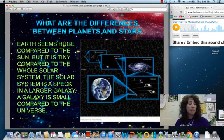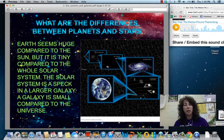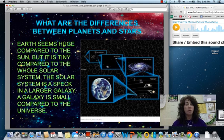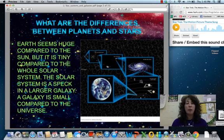The difference between planets and stars. This is important. Of course, Earth is a planet, and it seems huge compared to the sun, but that's only because we're on Earth and the sun is so far away. Compared to the whole solar system, it is all small. And then compared to our galaxy, the Milky Way, it is even smaller. So we have to think about all of these things in comparison to each other.